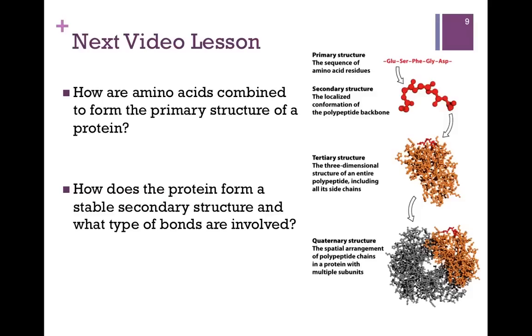In our next lesson, we want to look to see how amino acids are combined to form the primary structure of a protein, and then how does that protein form a stable secondary structure? What types of bonds are involved?